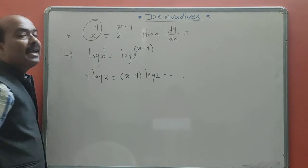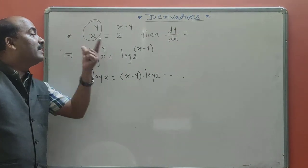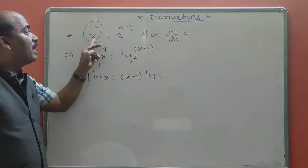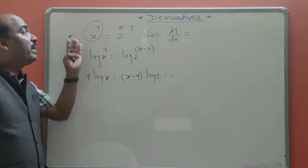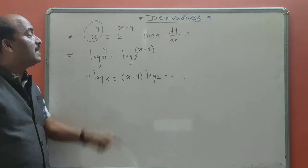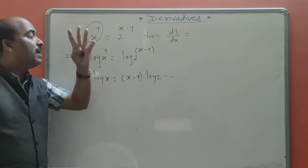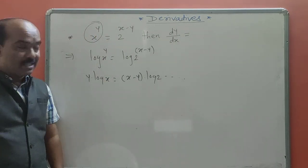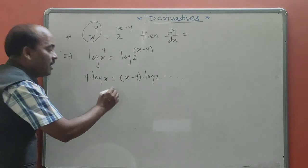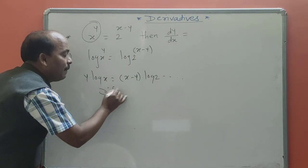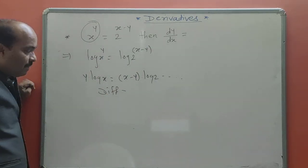We apply taking log here because both the base and power are variables. How to decide the function is Implicit: directly while y is available in the function, the function is Implicit. This is the simplification of the function, and after simplification, differentiate the function and find dy/dx.